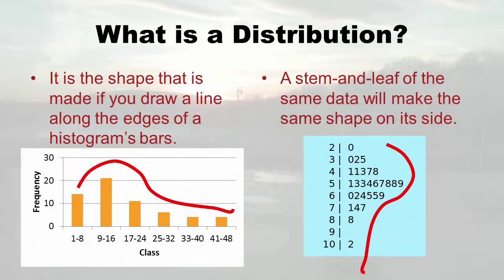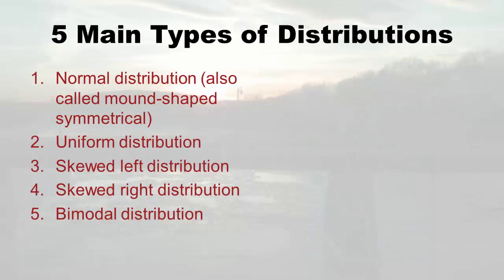So what is this distribution thing? It's actually just a shape — the shape made when you draw a line along the edges of the histogram's bars. You can also do it with a stem-and-leaf display. There are five distributions we'll concentrate on in this class, though there are many more in higher-level statistics.